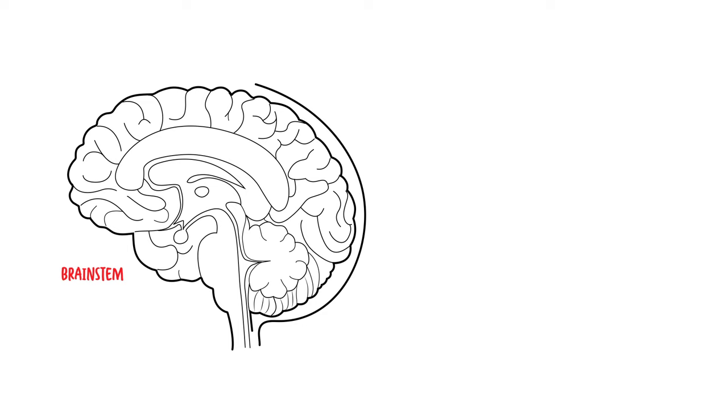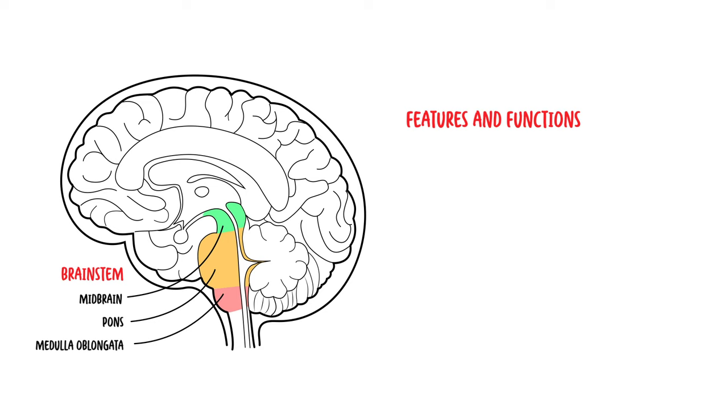The brainstem is a stalk-like projection found in the distal part of the brain, made up of the midbrain, pons, and medulla oblongata. Each component of the brainstem has its own unique features and function.